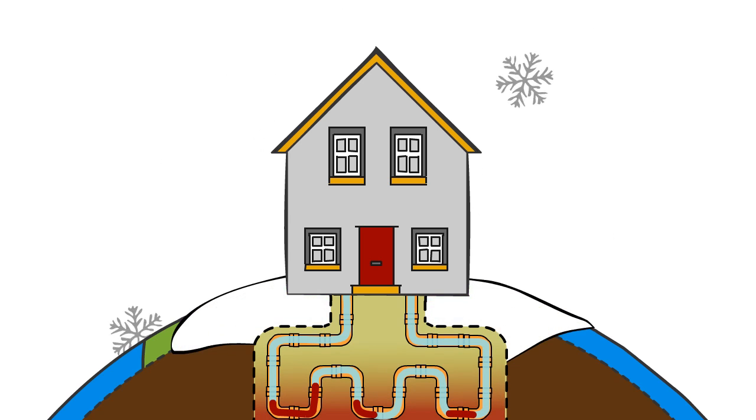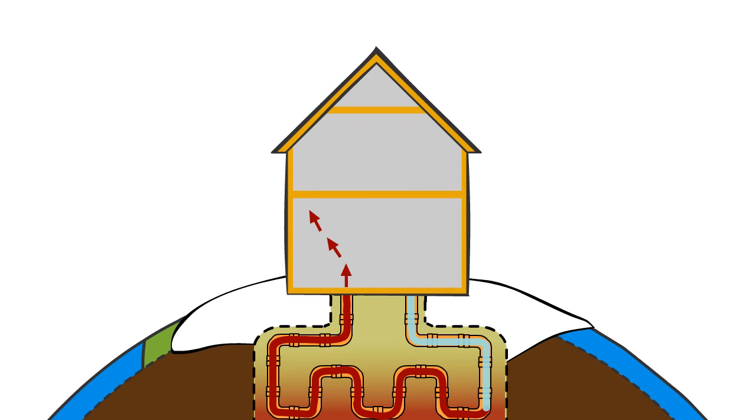In the winter, heat from the ground is absorbed into the pipes and pushed upwards, where it can be circulated throughout the house.